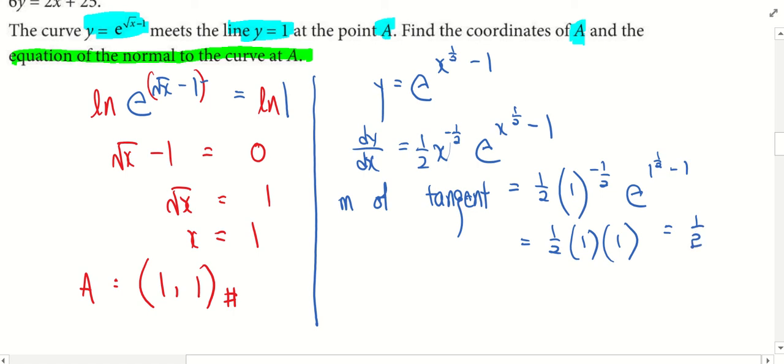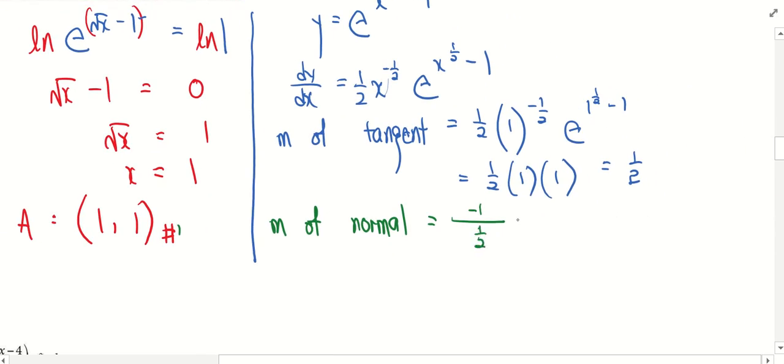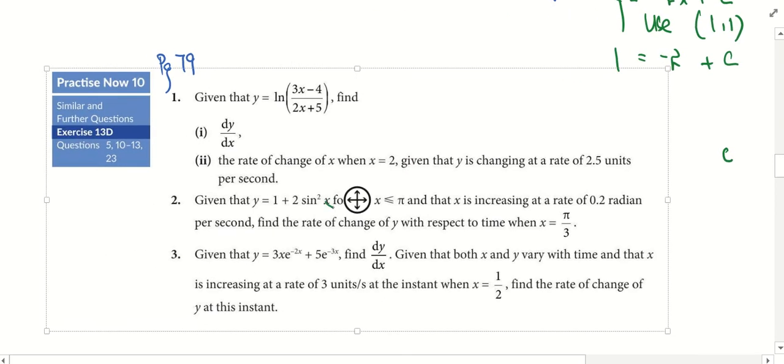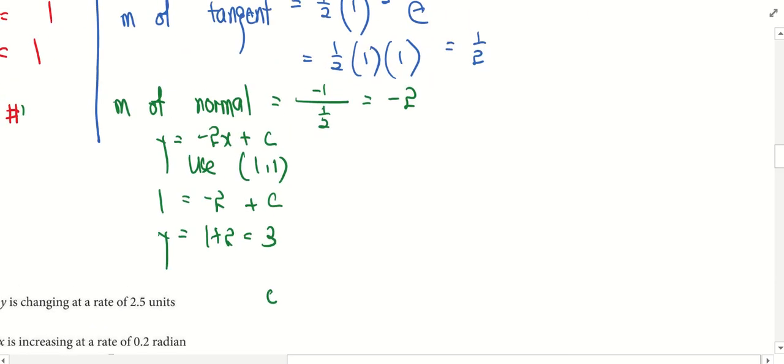But do we want the gradient of the tangent? No. We want the normal. So remember, negative reciprocal. I find the gradient of the normal. Negative reciprocal of half, you will get a negative 2. So y equal to negative 2x plus c. Use the point A, 1, 1. So 1 is equal to negative 2 plus c. So end up my c will be 1 plus 2 which is equal to 3. So I can find out the equation of the normal in this case.